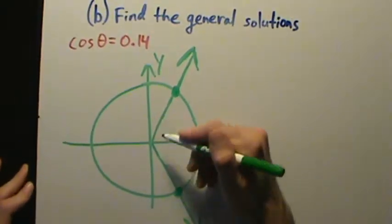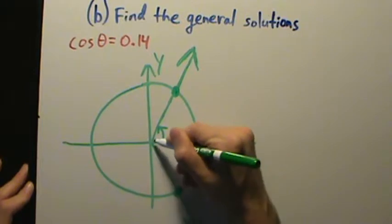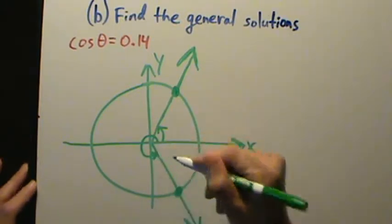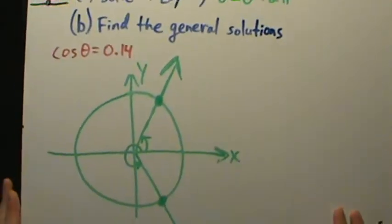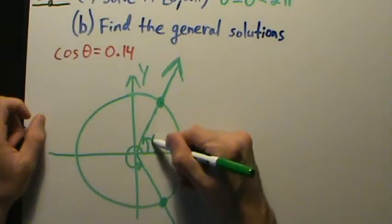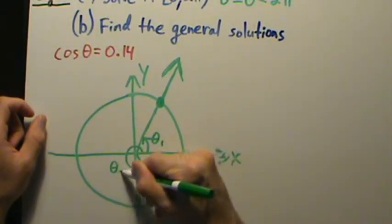Okay, so this angle right here and this angle right here, these are our two values of theta in between 0 and 2 pi. Okay, so how do we get this one here? Let's call this one theta sub 1, this one will be theta sub 2.